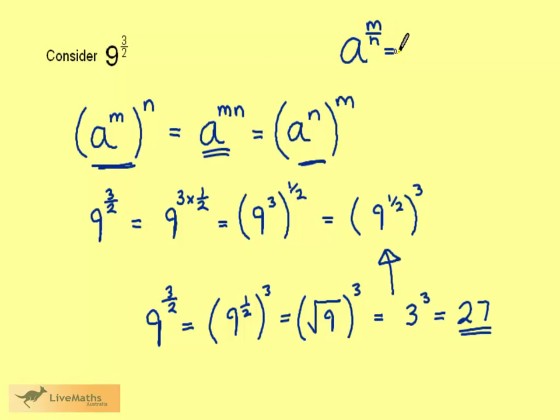a to the power m over n can be written as the nth root of a, then raised to the power m, or alternatively as a to the power m, then nth root of a.